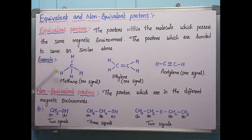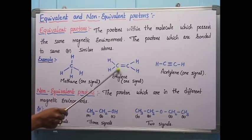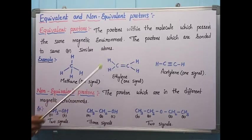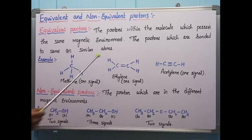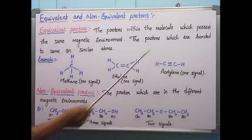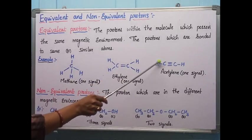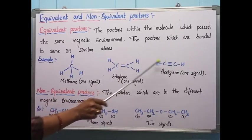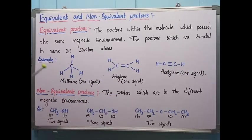For example, methane has four protons all attached to the same atom, so it gives a single signal in the NMR spectra. In ethylene (C=C), the hydrogens on both sides are attached to similar carbon atoms with equal magnetic strength due to the double bond, so all four protons give the same signal. In acetylene, both hydrogens are bonded to triply bonded carbons in the same magnetic environment, so they also give one signal.